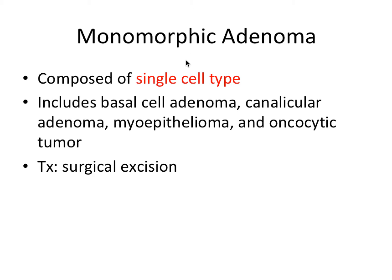Monomorphic adenomas include basal cell adenomas, canalicular adenomas, myoepitheliomas, and oncocytic tumors. This category encompasses a whole bunch of adenomas, but they're all involving a single cell type. Treatment for this one would be surgical excision, and it has a pretty similar appearance to the pleomorphic adenoma.